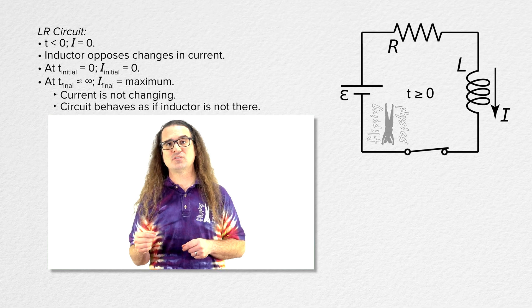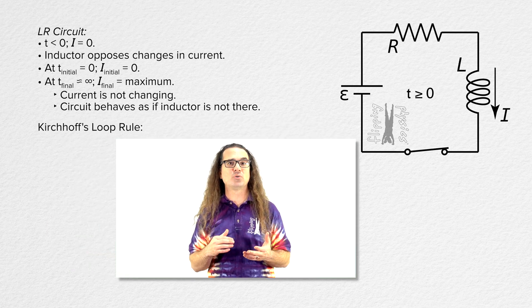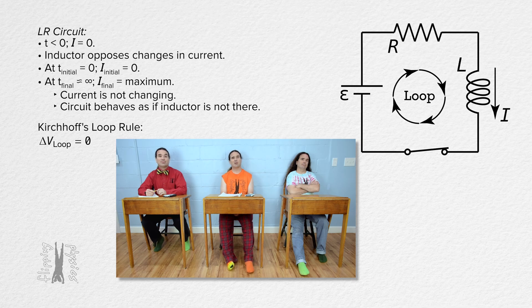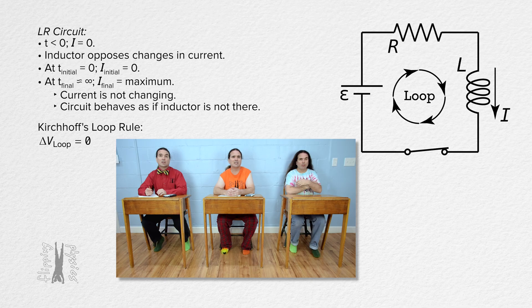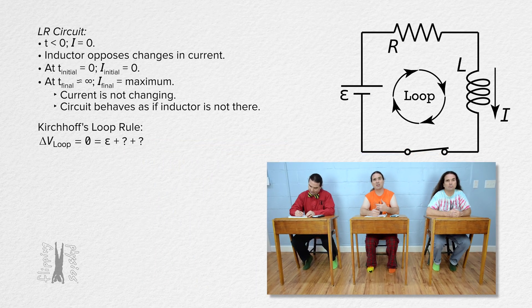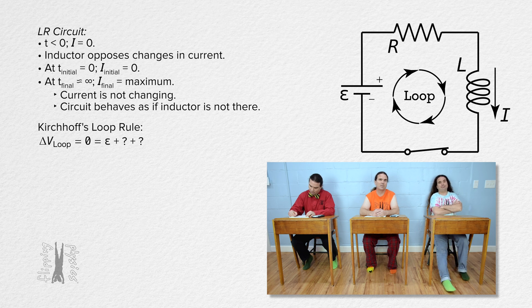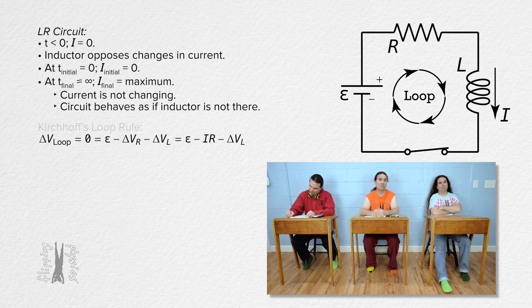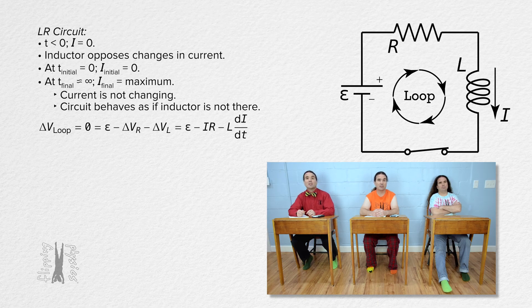We can actually determine the equations for the limits. Bobby, please apply Kirchhoff's loop rule to the circuit starting in the lower left-hand corner. Kirchhoff's loop rule states that the electric potential difference around a loop equals zero. Starting in the lower left-hand corner and moving clockwise in the direction of current, we add the EMF of the battery, then subtract the electric potential difference across the resistor, and subtract the electric potential difference across the inductor. We substitute current times resistance for the resistor term and inductance times the derivative of current with respect to time for the inductor term.